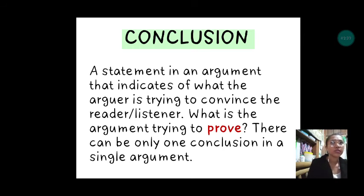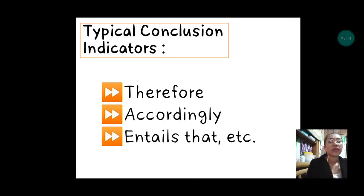There can be one and only one conclusion in a single argument. This conclusion is what the author is trying to deliver to the reader or listener. This serves to persuade the readers or listeners. Like I said from the beginning, we can only have one conclusion in one argument. These are the typical conclusion indicators: therefore, accordingly, entails that, etc.